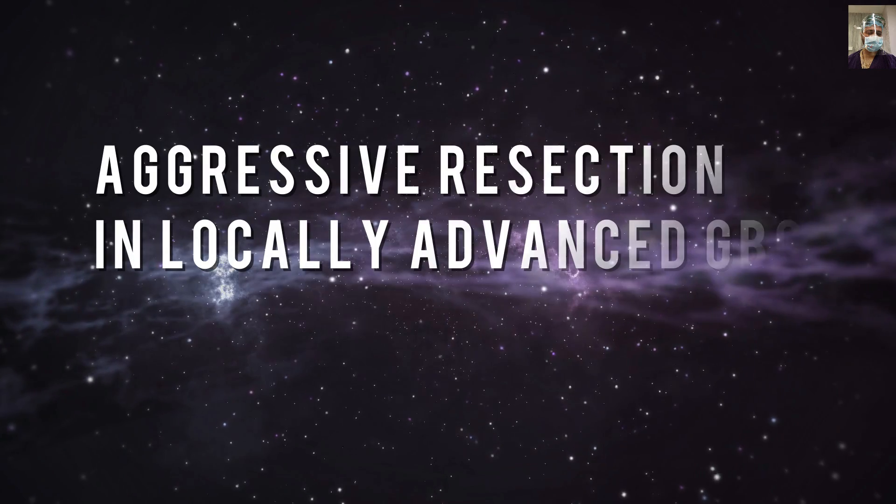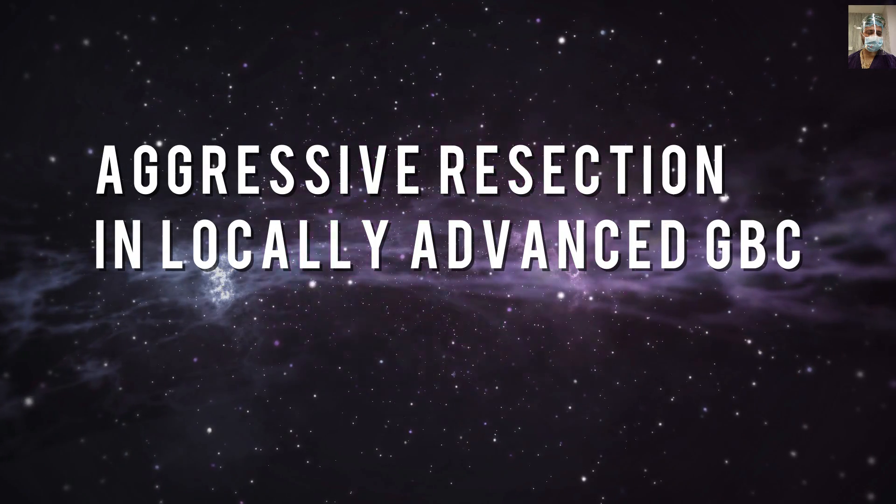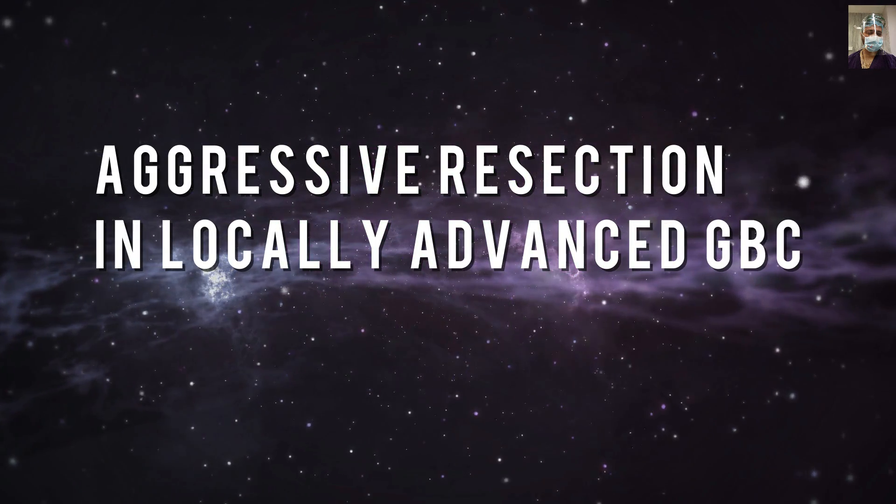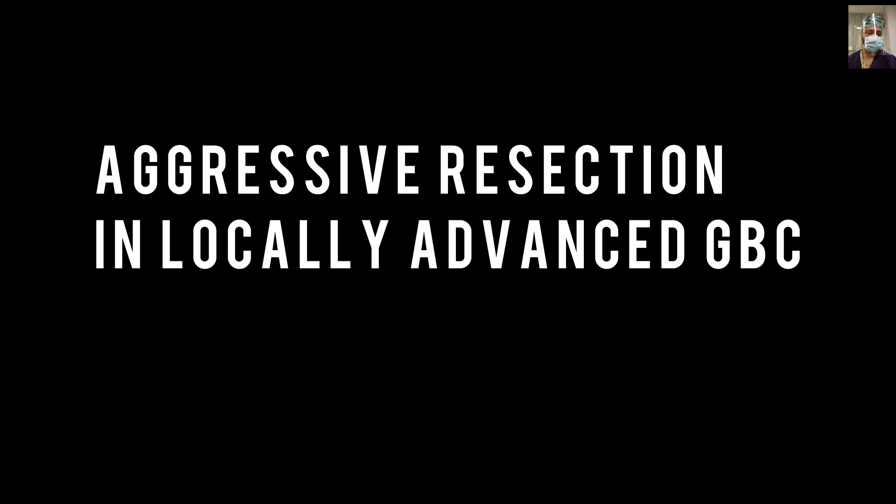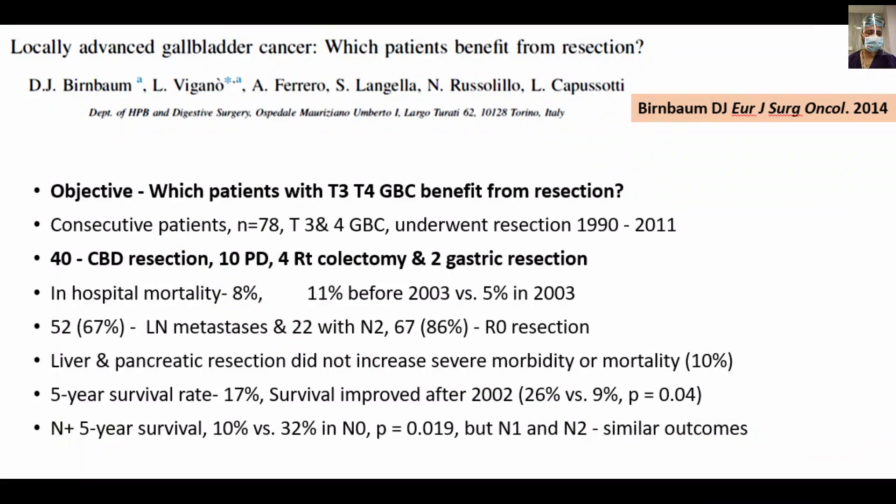Hopefully you have already watched our previous videos covering lymphatic drainage, jaundice, and related topics. Now let's discuss the role of aggressive dissection in locally advanced gallbladder cancer. The definition of locally advanced gallbladder cancer is any tumor with lymph node metastasis or any tumor T3 and above.